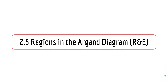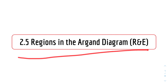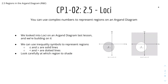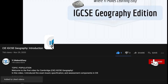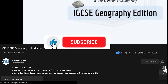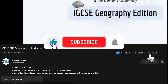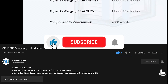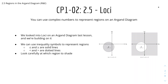Hey friends, my name is C and you're watching Mr. Easy. Welcome back to a new video for A-Level. Further Maths today, we have 2.5 for the regions in the Argand Diagram — rules and examples video. We'll get started with loci, but don't forget to leave a like, subscribe, and ring the notification bell so that you can see any future videos.